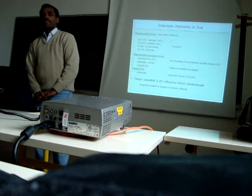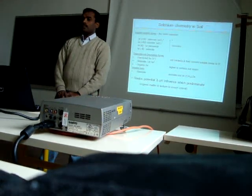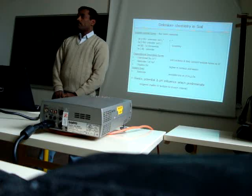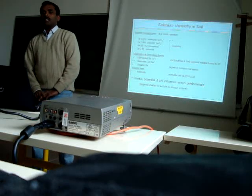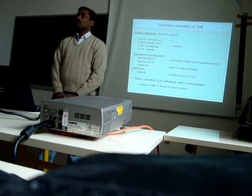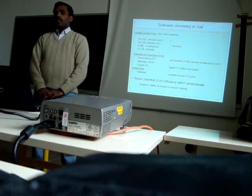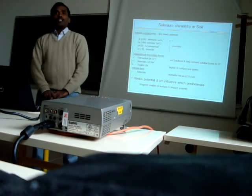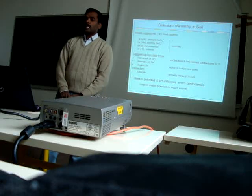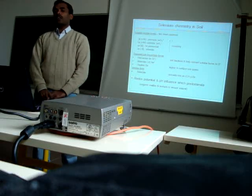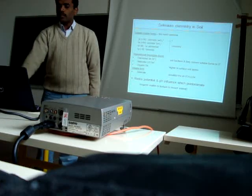Organic selenium, selenide, and elemental selenium are key forms. The volatile form of selenium is selenide, and it is possibly lost as dimethyl selenide. Redox potential and pH have more influence on selenium compared to organic matter and texture of the soil.